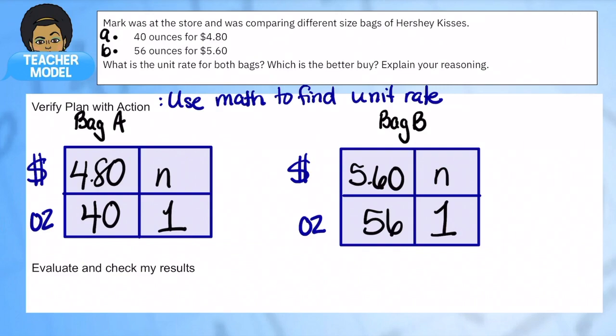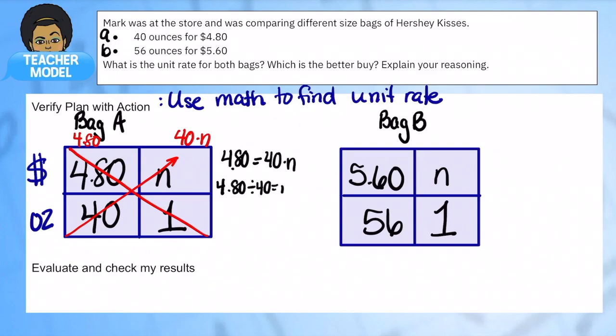We're going to do our usual cross product. When we multiply in this direction we get 40 times the number, and because it's unit rate we already know it's 480 times 1, which is just 480. We have $4.80 equals 40 times a number. We're going to rewrite this into $4.80 divided by 40 equals that number. Let's use our long division for this. Here's $4.80, here's 40.